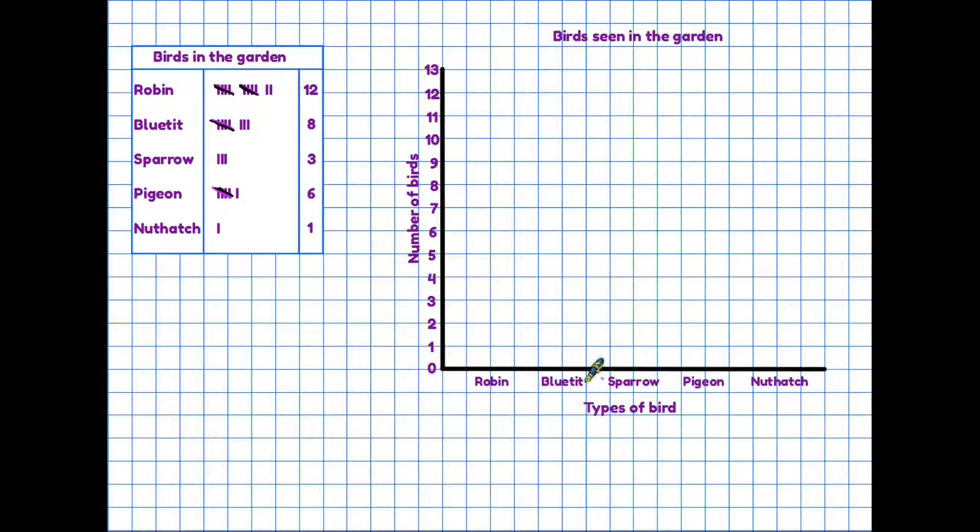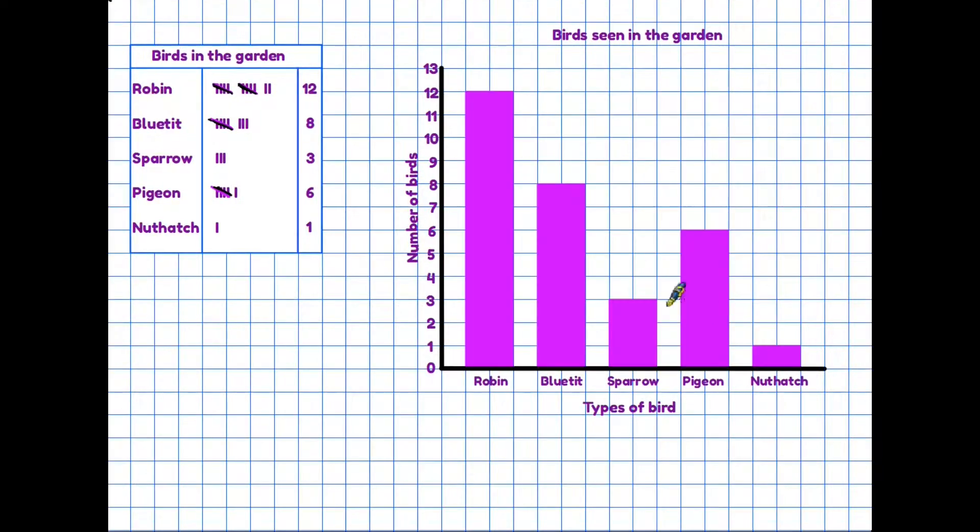Now we can start filling in the chart to show the numbers. And as you can see, a bar has been added for each of the birds in the garden.